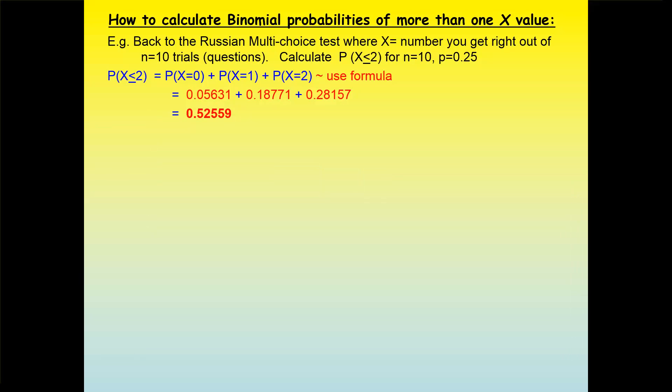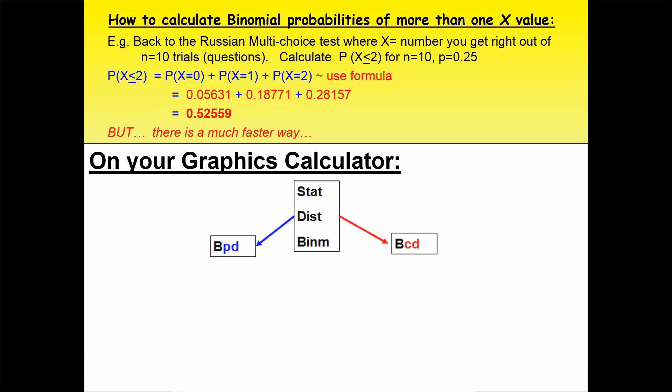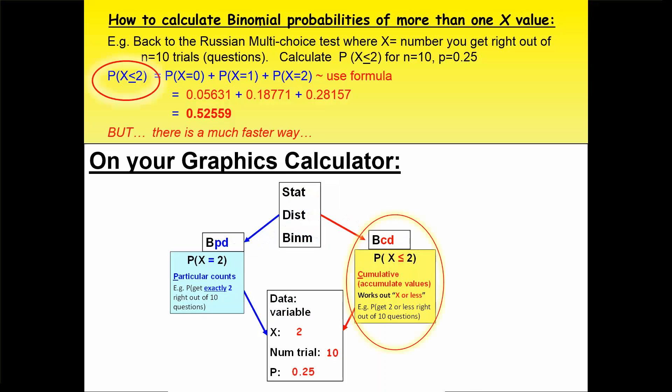The third and final way, by far the easiest and quickest, is to use your graphics calculator. On the calculator, you go to Menu, Stat, Distribution, then Binomial. You have two options: BPD and BCD. BPD stands for probability distribution — think of P as 'particular'. We use BPD when we want the probability of a particular x value, like exactly 2 correct. We use BCD for cumulative values, meaning x or less. So for the probability of getting 2 or less correct, we use BCD and type in 2.